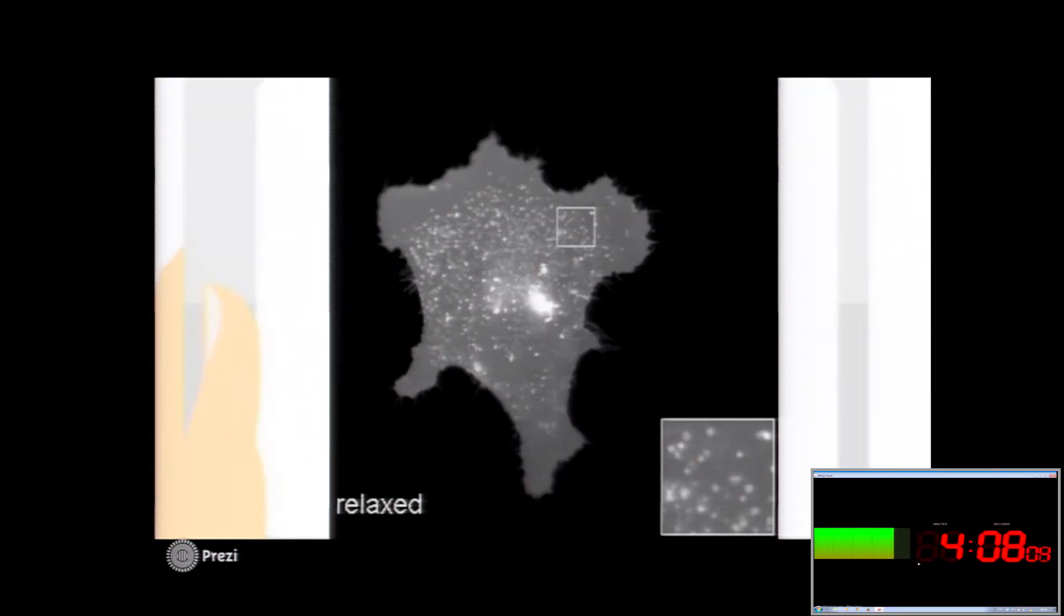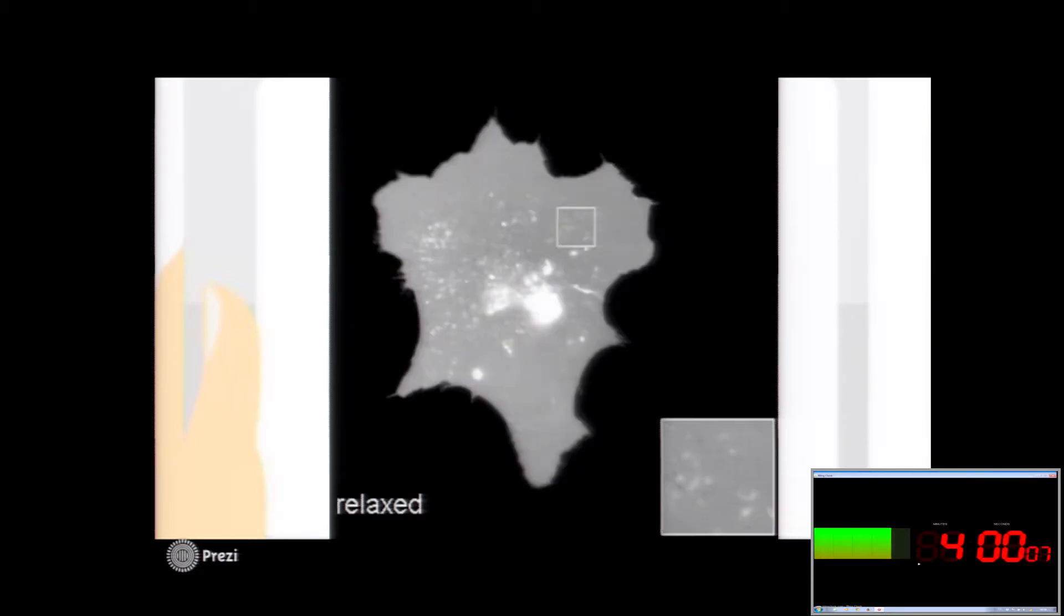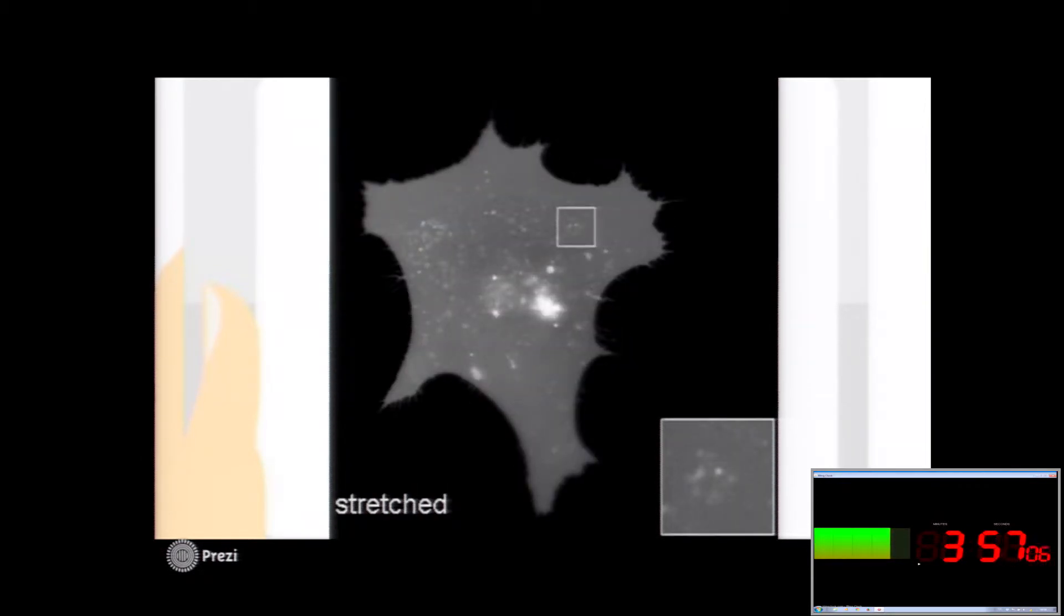Here you can observe that in the moment of stretch, there are almost no changes, but once we release the stretch, immediately plasma membrane invaginations appear. Those plasma membrane invaginations are those small little dots that you can see in the moment of stretch release.